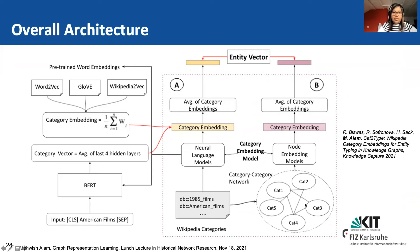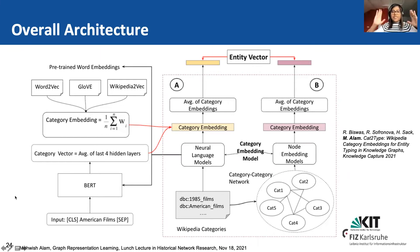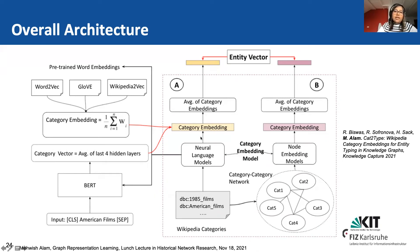We ran node embedding models on this category graph to obtain category embeddings — vector representations generated from this network. Then for the lexical information inside Wikipedia category names, we used word2vec, considering contextual information of 2-3-4 words within the Wikipedia category. We experimented with word2vec, GloVe, and Wikipedia2Vec separately, obtaining category embeddings based on lexical information. After concatenating these vectors, we got an entity vector, which was then used for multi-class and multi-label classification to perform type prediction.